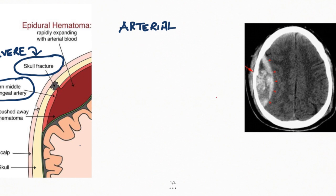The blood collects above the dura mater — that is why it is called epidural. Between the dura layer and the skull, blood gets collected and it rapidly expands. This is epidural hematoma, and it happens across the dural attachments.